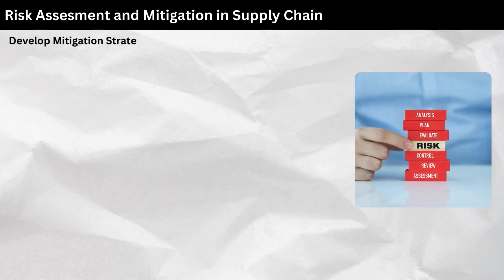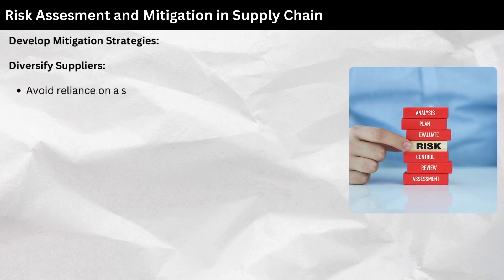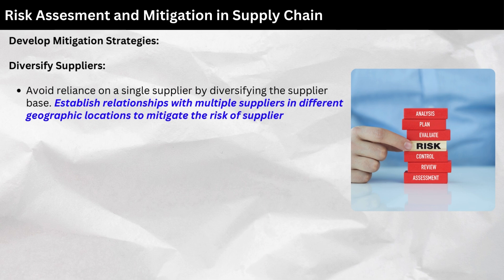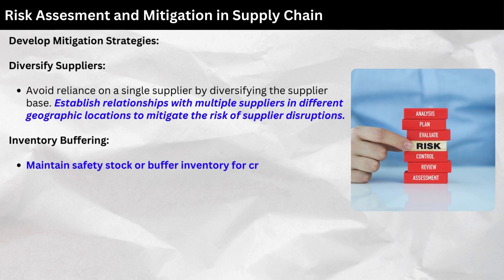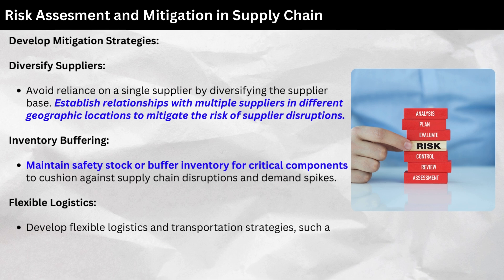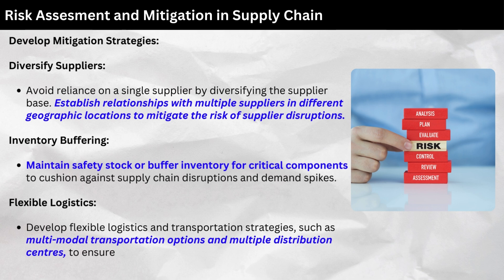Develop mitigation strategies. Diversify suppliers: Avoid reliance on a single supplier by diversifying the supplier base. Establish relationships with multiple suppliers in different geographic locations to mitigate the risk of supplier disruptions. Inventory buffering: Maintain safety stock or buffer inventory for critical components to cushion against supply chain disruptions and demand spikes. Flexible logistics: Develop flexible logistics and transportation strategies, such as multimodal transportation options and multiple distribution centers, to ensure continuity in case of disruptions.